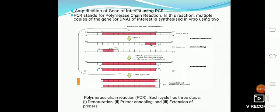Since the sequence of the primer is complementary to the 3' end of the template DNA, annealing is carried out at a lower temperature depending on the length and sequence of the primers. The third step is extension, where Taq polymerase — from Thermus aquaticus — synthesizes the DNA region between the primers using deoxynucleoside triphosphates and Mg²⁺ ions.